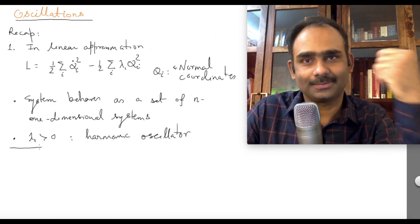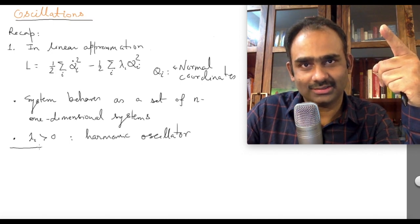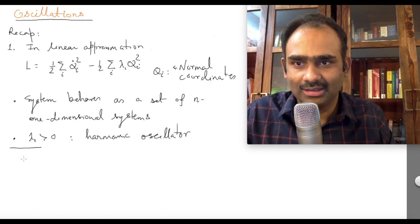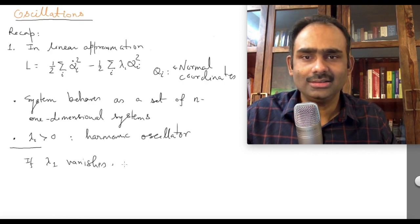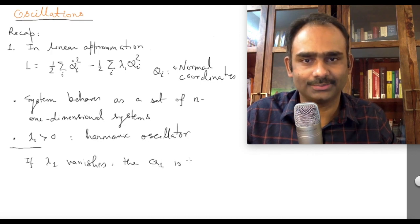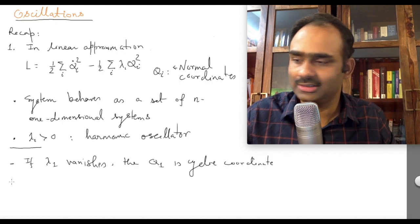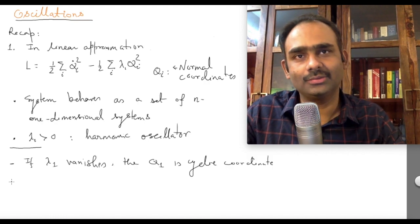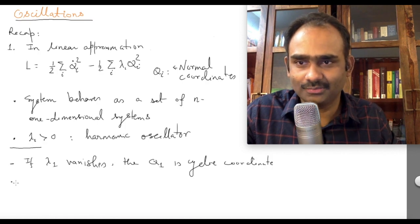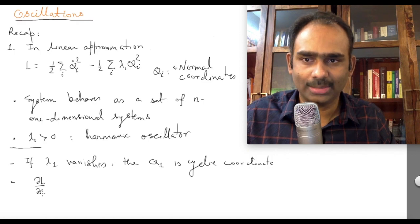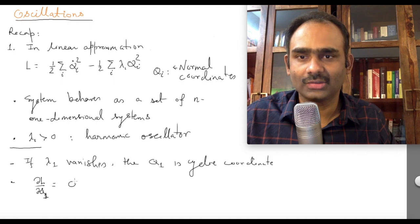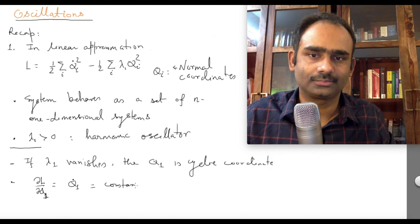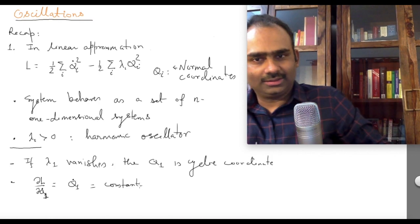It will be very nice if one of the lambdas vanishes, and in fact some of them will vanish as we are going to see soon. If lambda_1 vanishes, then q_1 does not appear in the Lagrangian, which means q_1 is a cyclic coordinate. We have talked about this several times earlier — if that is the case, then its corresponding conjugate momentum will be a conserved quantity. The conjugate momentum corresponding to q_1 is del L over del q_1-dot, which equals q_1-dot, and that will be a constant.